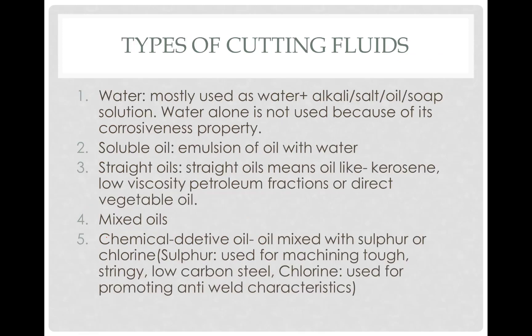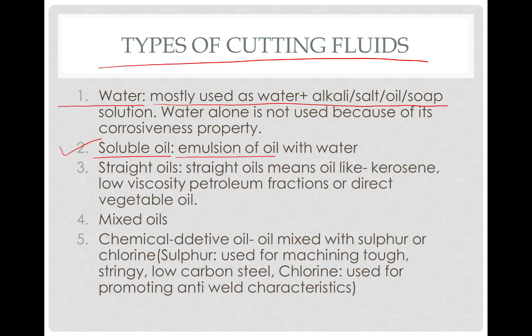What types of cutting fluids are available? First, water alone is mostly not preferable because water causes corrosion, so water mixed with an alkali salt or oil is used instead. The second type is soluble oil, which is an emulsion of oil with water — water makes up around 80 percent. This gives very good lubrication from the oil and very good cooling properties from the water.